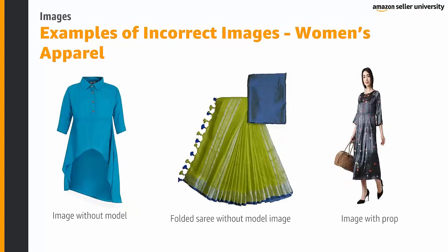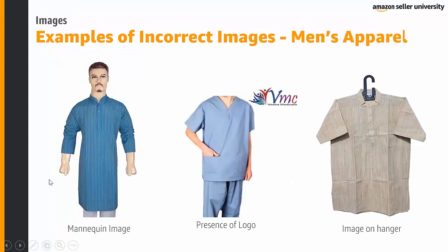Examples of incorrect images under women's apparel include: an image without a model, a folded saree without a model, and an image with a prop such as a bag. Examples of incorrect images under men's apparel include: mannequin images, presence of a logo, and an image on a hanger.